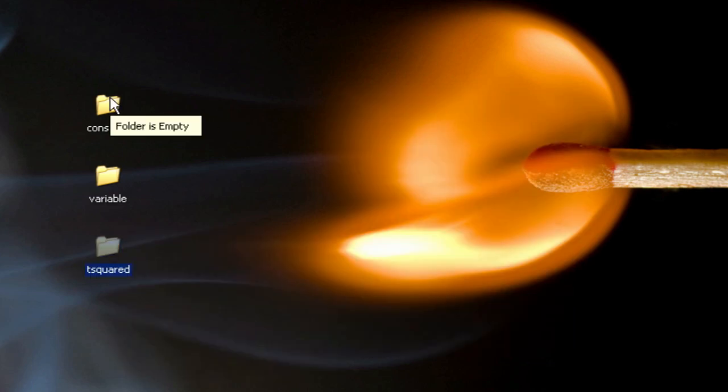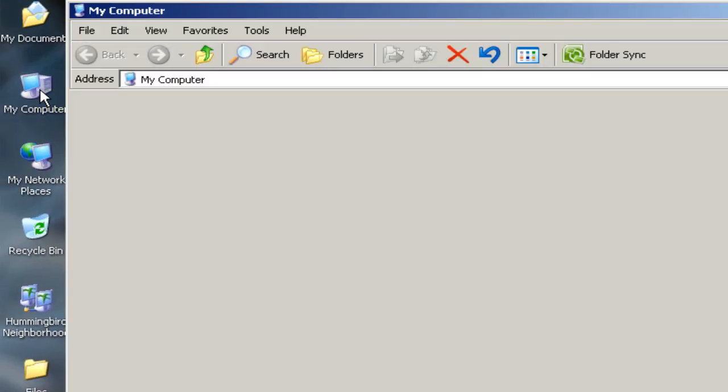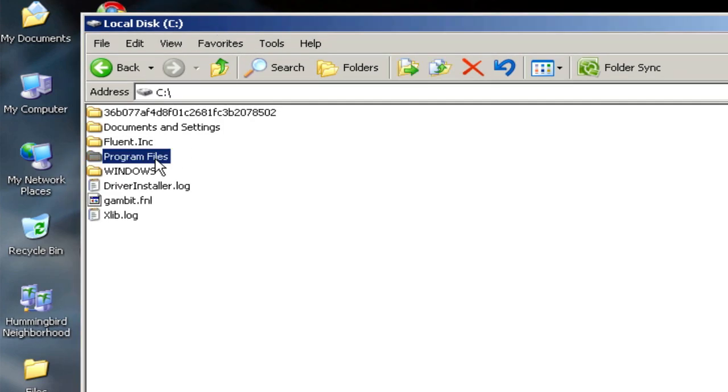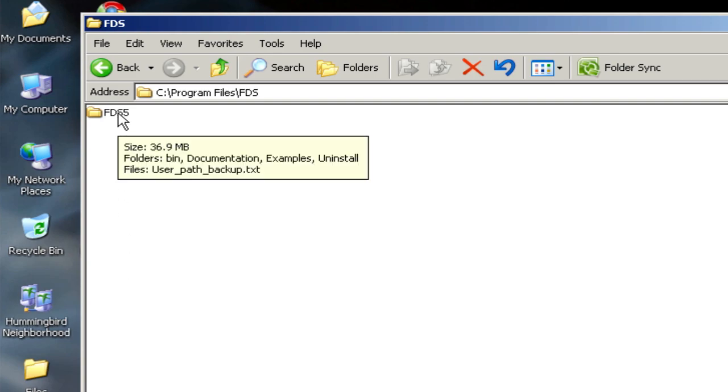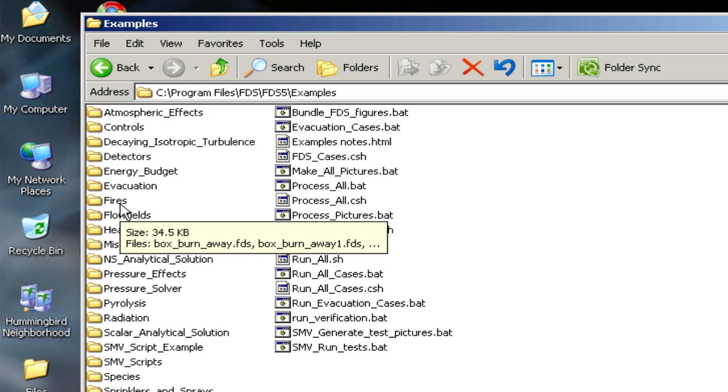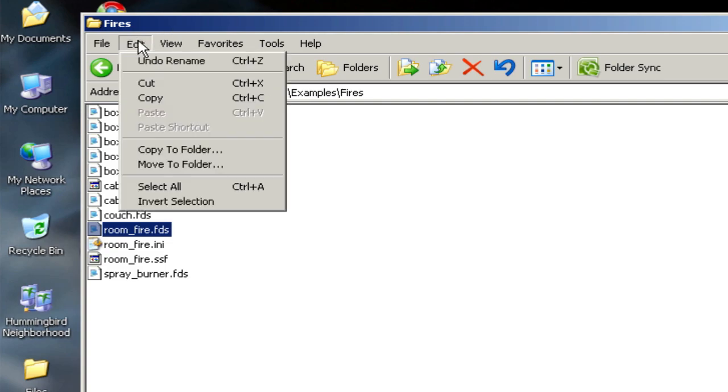In these folders, I want to put the room fire example case that comes with Fire Dynamics Simulator. I've already installed FDS on this computer. So I'm going to navigate to the folder where that is to that example file. If I go to my computer and the C drive, I can go into Program Files, FDS, FDS5, Examples, and Fires. In this folder, there's an FDS input file called RoomFire.FDS. And that's the file I want to get. It comes with the FDS installation.